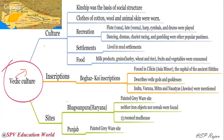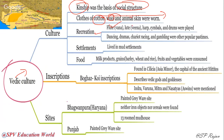Vedic culture had kinship — kings started and social structure divided into upper and lower levels. Clothes were made of cotton, wool, and animal skin. Recreation activities included flute, lute (veena), harp, cymbals, drums, dance, drama, chariot racing, and gambling. Settlements were mostly in mud houses. Food included milk products, grains, fruits, and vegetables.